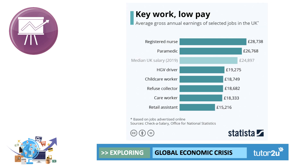One of the key issues thrown up by the pandemic is that many of our key workers - essential workers in many ways - are actually low paid. Data from Checker Salary shows that retail assistants, care workers, refuse collectors for local councils, and childcare workers all have average gross annual earnings of less than £20,000 a year - well below the median earnings of just under £25,000. Even paramedics and registered nurses are earning only just a little above the median salary. This is one of the key issues: many workers essential to the battle against coronavirus are amongst the lowest paid in the economy.